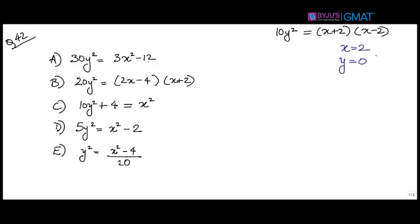Looking at option A: I get 3 × 2² − 12, which is 12 − 12 = 0, so 30y² = 0, giving y = 0. Since I get y = 0 when x = 2, option A satisfies the given expression, and we don't want an expression that is satisfying — option A goes out.